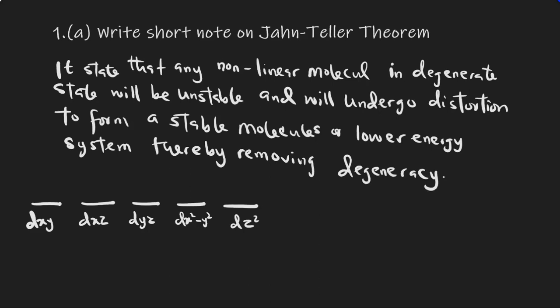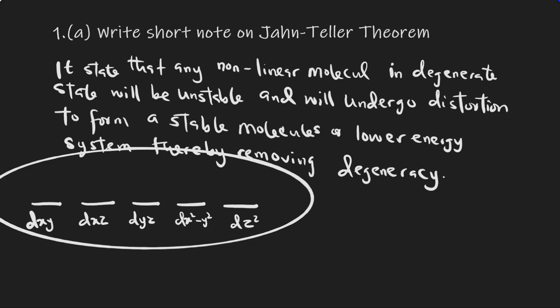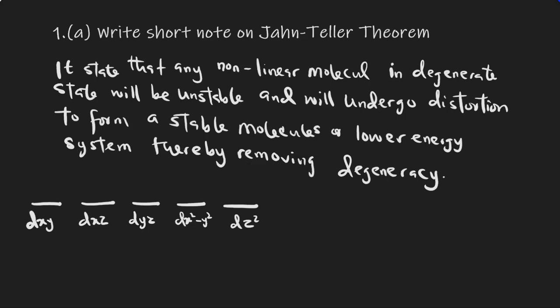The Jahn-Teller theorem states that any nonlinear molecule in a degenerate state will be unstable and will undergo distortion to form a stable molecule or lower energy system, thereby removing degeneracy. All this breaking of degeneracy is for the molecule to be stable. Once ligands approach a metal to form a molecule, the d orbitals that were all having the same energy will no longer have the same energy because there will be distortion — some will go higher in energy while some will go lower.